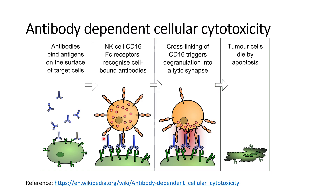As soon as the NK cell detects the Fc portion of these antibodies via the CD16 linkage, once CD16 is connected, it will release cytokines that will cause cell lysis of the foreign harmful particles or the tumor cells that are being targeted by the antibodies. This is how antibody-dependent cellular cytotoxicity works.